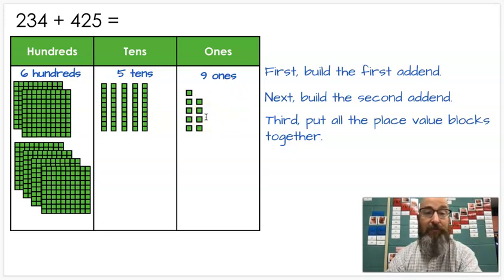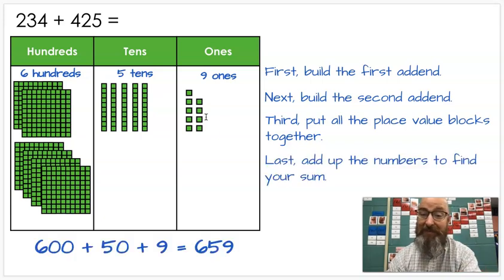Now I can just add those up together. Six hundreds makes six hundred, five tens makes fifty, nine ones makes how much? Nine. Add those up. Six hundred plus fifty is 650 plus nine, 659, which means 234 plus 425 is 659.